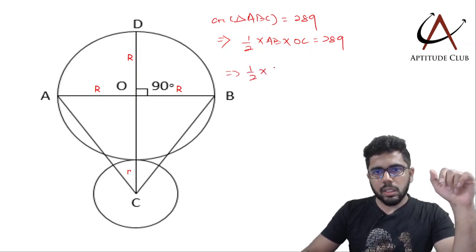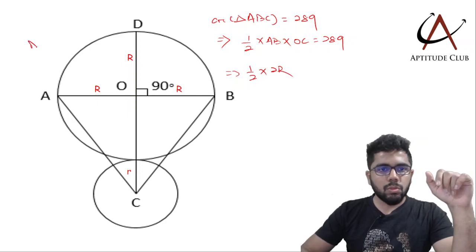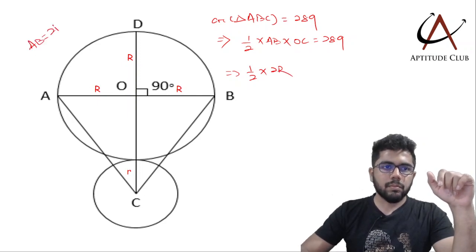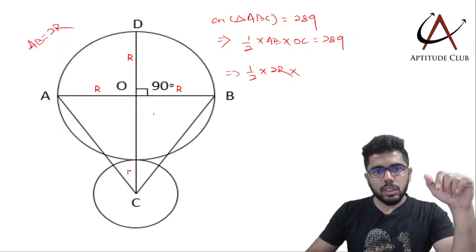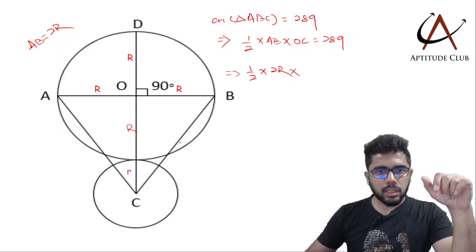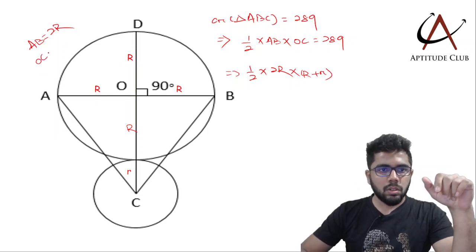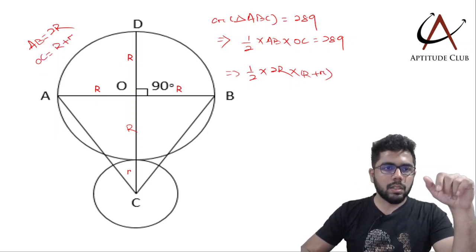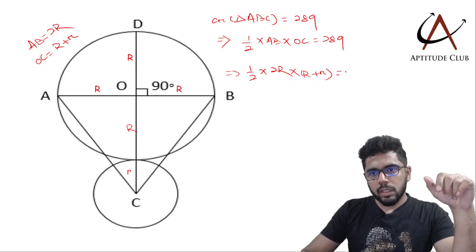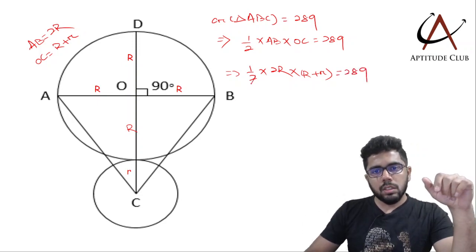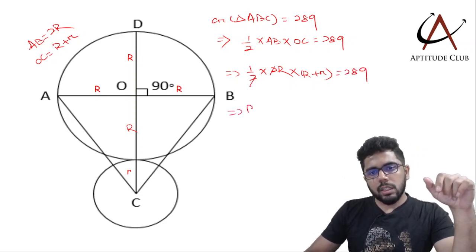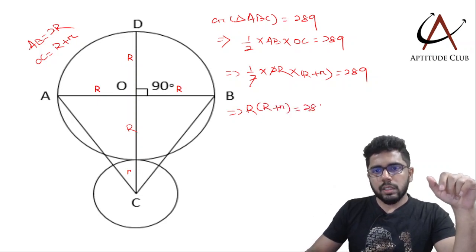And how much is OC? OC is R plus r. So this equals 289. I get this result: R times (R plus r) equals 289.